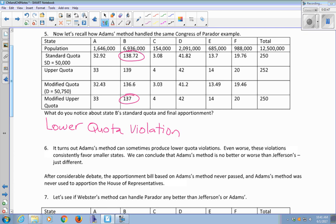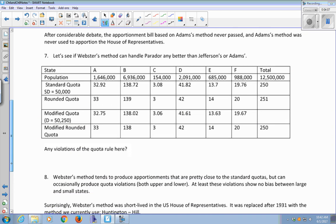And it turns out that Adams' method does sometimes produce lower quota violations. And even worse, those violations consistently favor smaller states. So we can conclude that Adams' method is no better or worse than Jefferson's, just a different kind of problem. And historically, after considerable debate, the apportionment bill based on Adams' method never passed. And Adams' method was never used to apportion the House of Representatives.